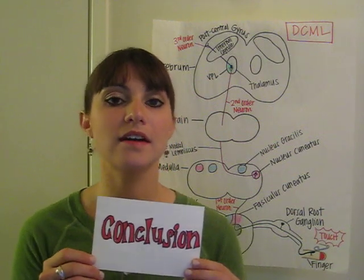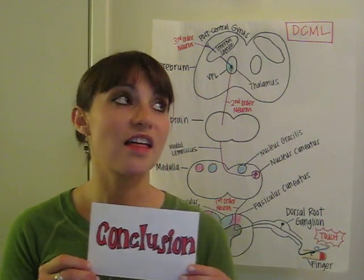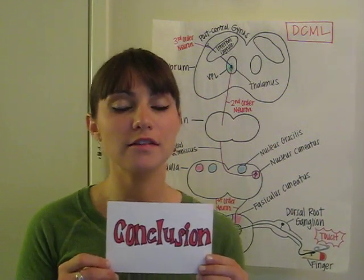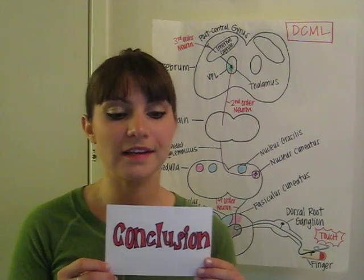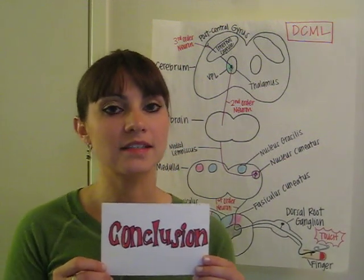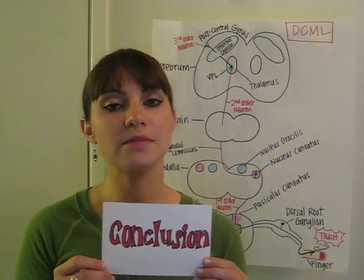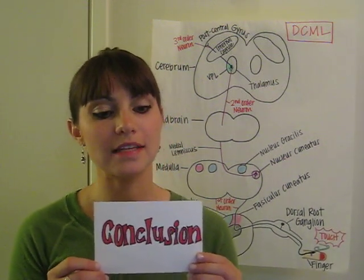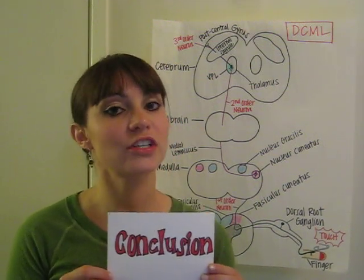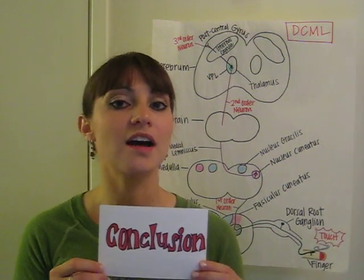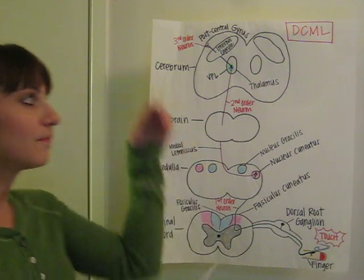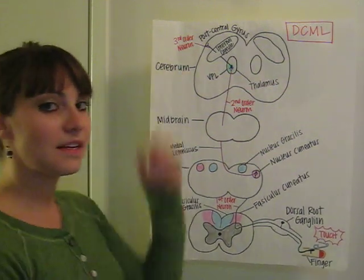Primary somatosensory cortex — that is where this info finally ends up. Responding to touch, vibration, and proprioception. The mechanoreceptors got the job done. DCML!